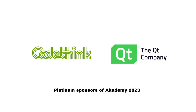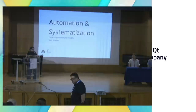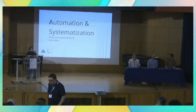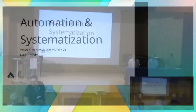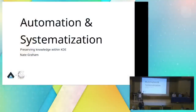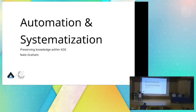Over the past years we've been working on goals, and part of the Academy has been to look at what has been happening around the goals that we voted on. That's what we're going to do now, and we're going to start with Nate to talk about the automation and systemization goal.